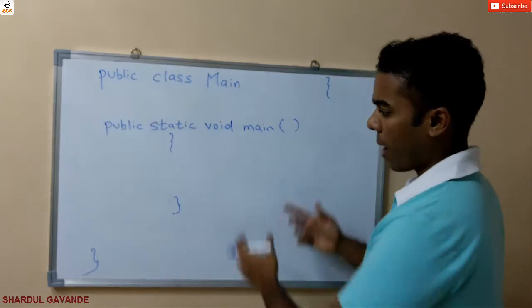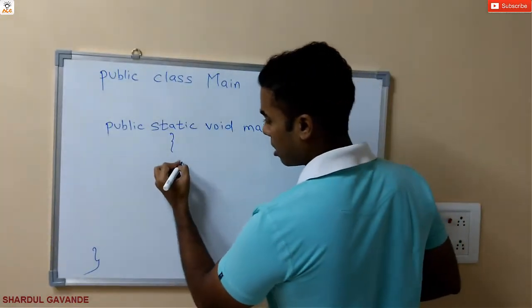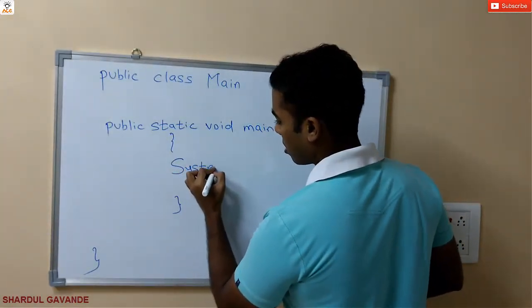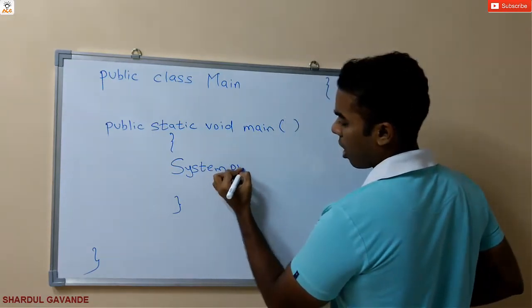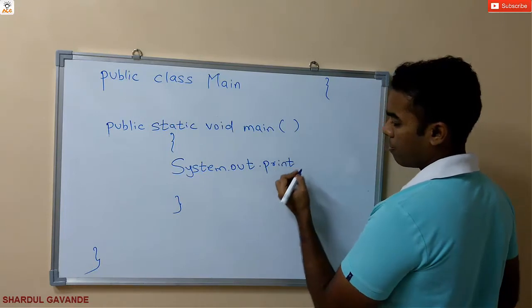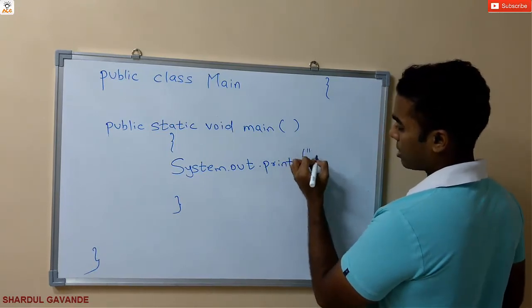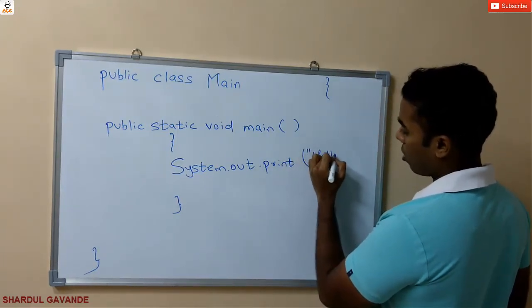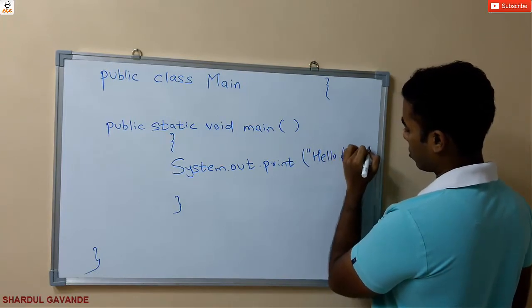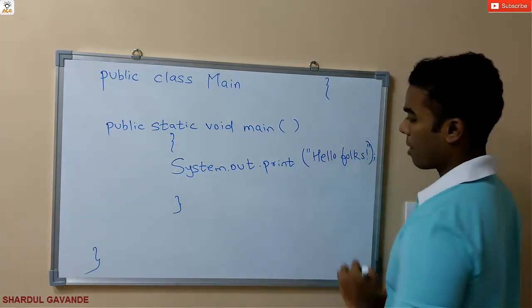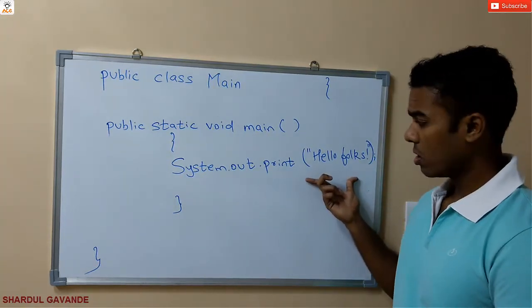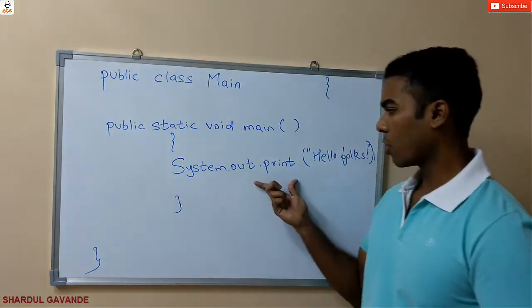So public static void main. Now under that, let's print something. We have System.out.print, and inside the bracket let's say hello folks. So I am printing hello folks with the help of System.out.print.